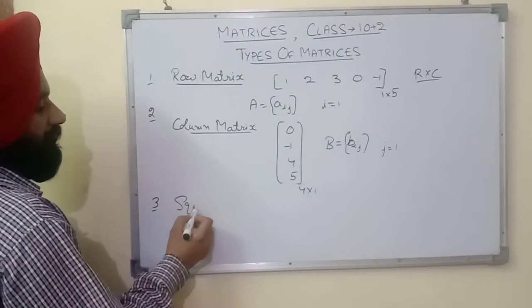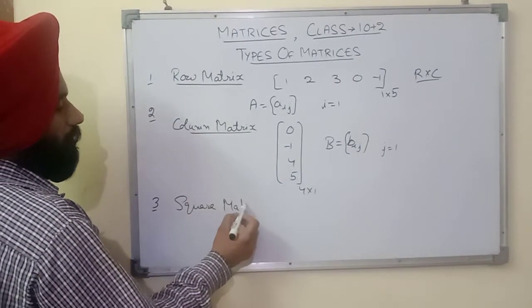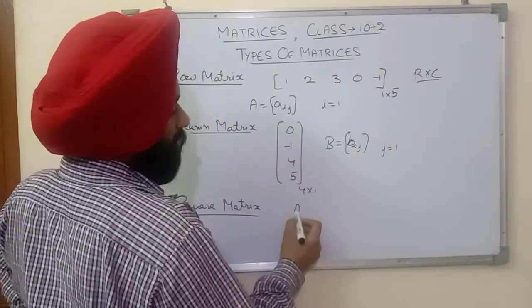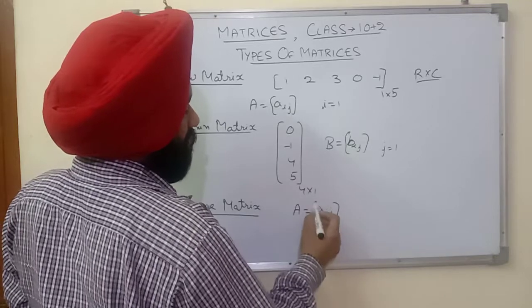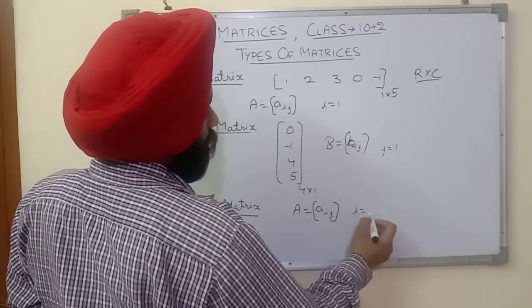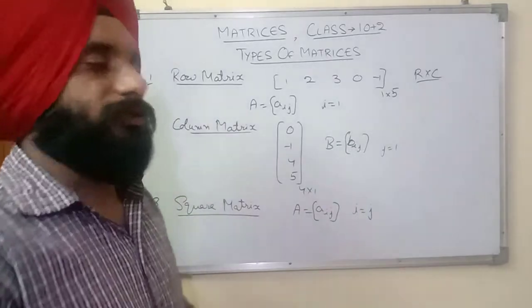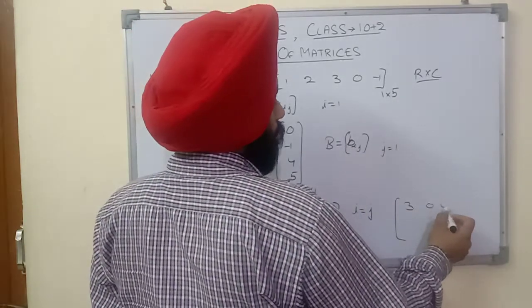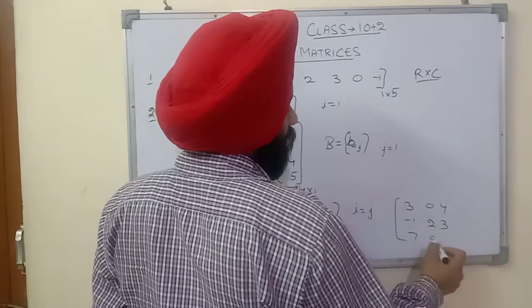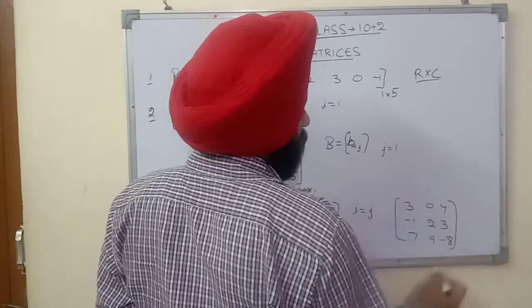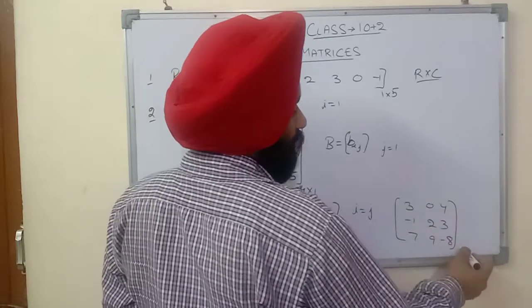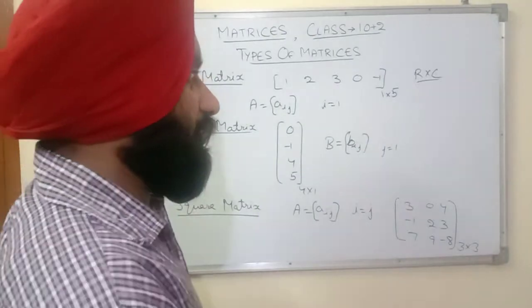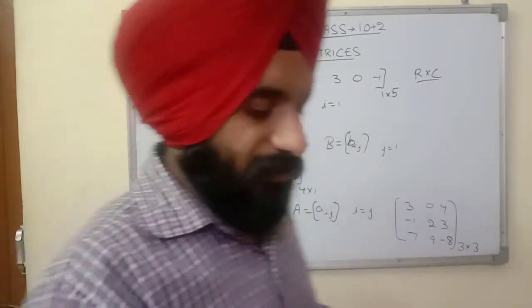Next is the square matrix. A square matrix is one in which the number of rows and columns are equal. If A = [a_ij] is a square matrix, then i will be equal to j. For example: [[3, 0, 4], [-1, 2, 3], [7, 9, -8]] — this is a square matrix with 3 rows and 3 columns.